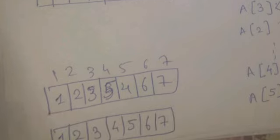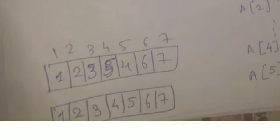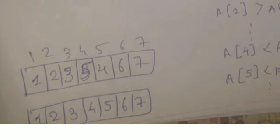Now check positions 2 and 3 — numbers 2 and 3 are already sorted, no exchange needed. Then positions 2 and 1 — numbers 1 and 2 are already sorted. So after this pass, the array is [1, 2, 3, 5, 4, 6, 7], and it is still not fully sorted.